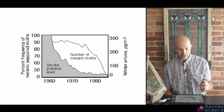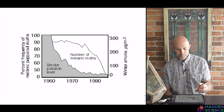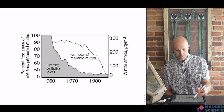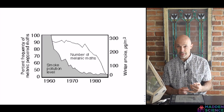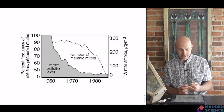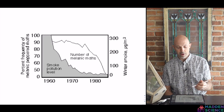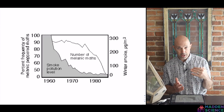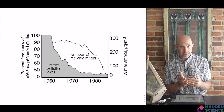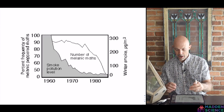If you look at this graph, you can see as we move into a decrease in smoke pollution in the 60s, 70s, and 80s, the number of melanic moths decreased. So you have a shift again because of a change in the environment.